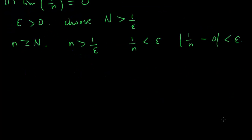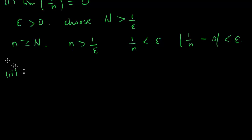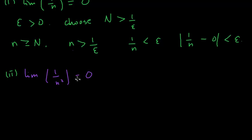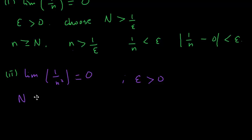Let's look at another problem. This problem is to prove that the limit of 1/n² equals zero. If you want to pause the video and try it yourself, go ahead. As always, take epsilon to be an arbitrary positive number, then choose N to be any number greater than 1/√epsilon.